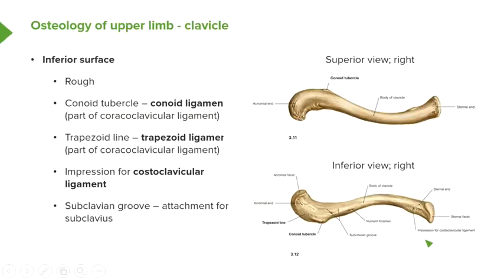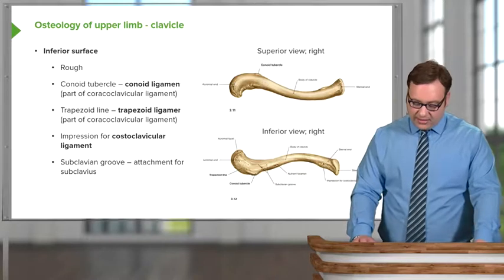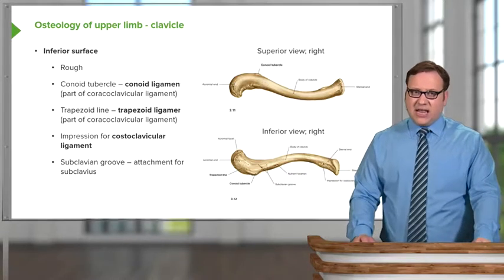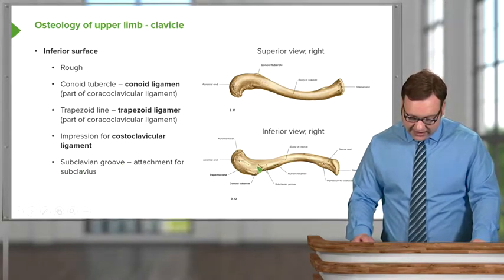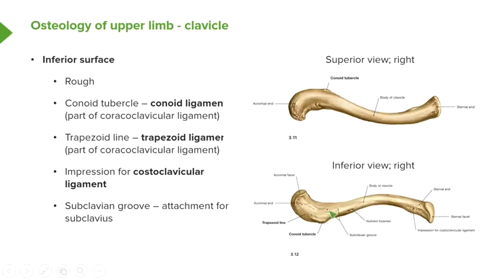We can also see an impression for the costoclavicular ligament near the sternal end of the clavicle. As its name suggests, the costoclavicular ligament attaches to the ribs and is important in the sternoclavicular joint, which we'll look at later in this series. There is also a subclavian groove, important for the attachment of the subclavius muscle — a small muscle running on the underside of the clavicle, covered when we look at the musculature. Another feature is the nutrient foramen, where the nutrient artery passes into the clavicle to supply it with blood.